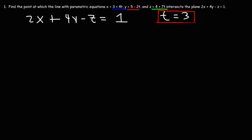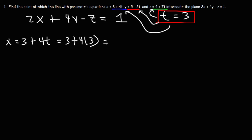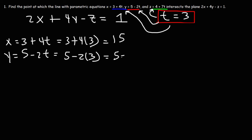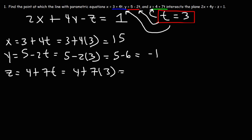Now the next thing we need to do is take our t value and plug it into the parametric equations. This is going to give us x, y, and z. x is equal to 3 plus 4t, so that's 3 plus 4 times 3. 4 times 3 is 12, plus 3, that's 15. Next we need to calculate y: 5 minus 2t, and this is going to be 2 times 3 is 6, so 5 minus 6 is negative 1. Then z is 4 plus 7t, so that's 4 plus 7 times 3. 7 times 3 is 21, and 4 plus 21 is 25.